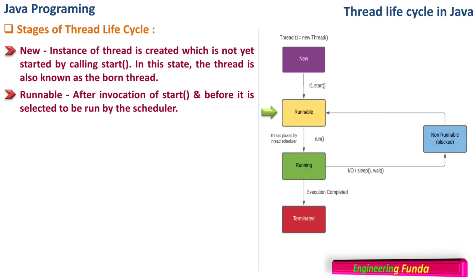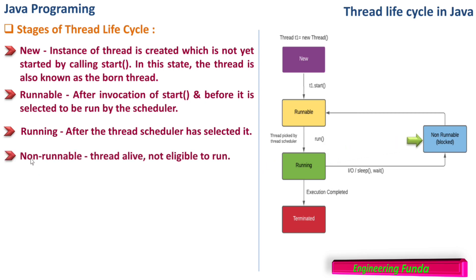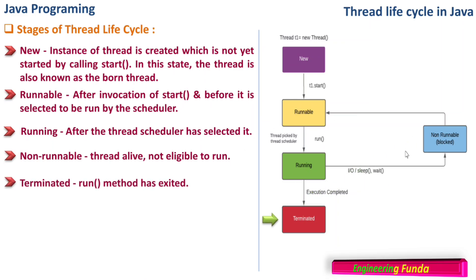So start is called but the thread is not running right now — it is in the runnable state. Then it calls the run method. Start internally calls run, so the thread is picked up by the thread scheduler and goes into the Running state after the scheduler has selected it for execution. Now if there is some blocking call — like some IO is expected, or sleep is called, or wait is called — then it goes to a Non-Runnable state. The thread is alive but not eligible to run. If it is waiting for some IO or user input, it will wait, and once the input is available it will go back to the Runnable state, then to Running, and so on.